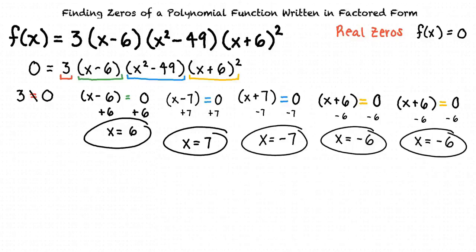Very good. These are our last real zeros, so we found that the function f(x) has the real zeros of 6, 7, -7, -6, and -6 again.